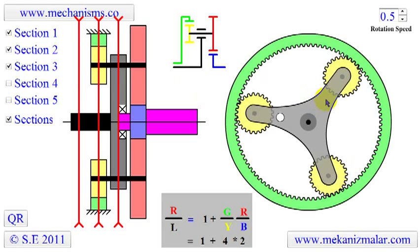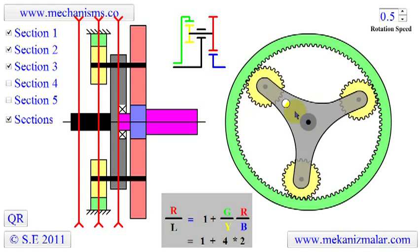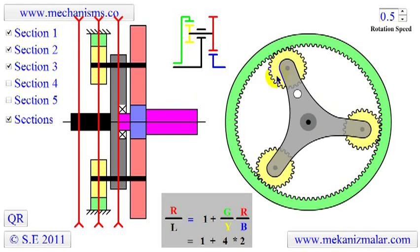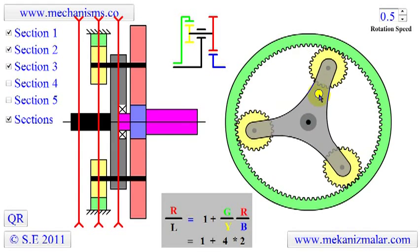The third section shows the carrier arm on which the yellow and red planets are attached. Notice that the input shaft is directly connected to the carrier.